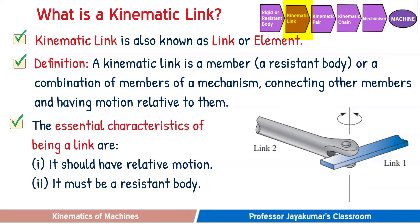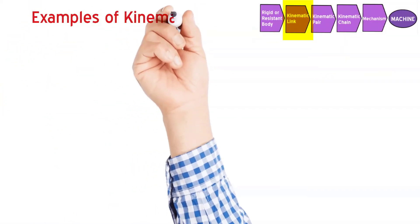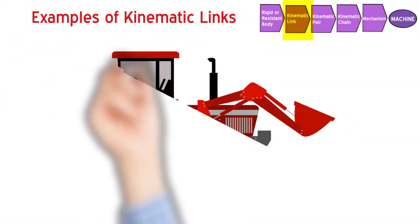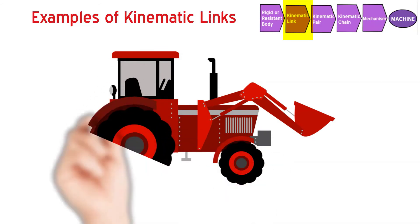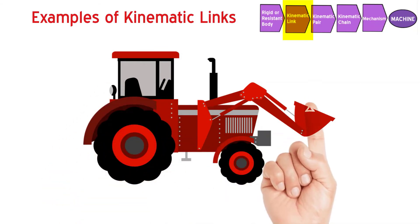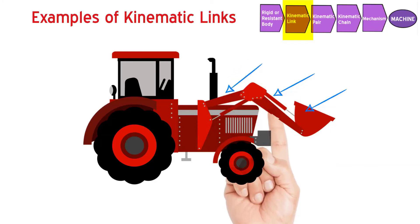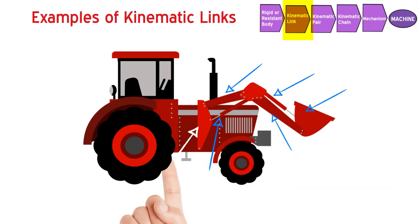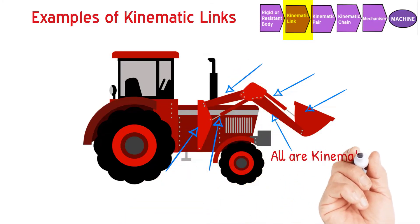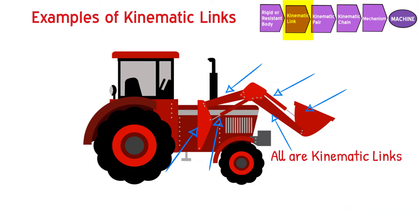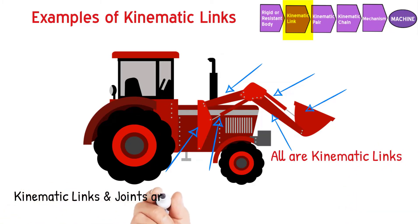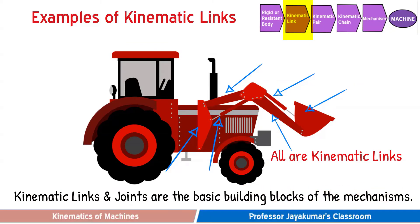Let us understand the concept with a practical example. Take a tractor front-end loader. Here the bucket, the cylinder actuators, and the various links and brackets — some of them will be moving and some will be fixed — but all are kinematic links. Kinematic links and joints are the basic building blocks of any mechanism.